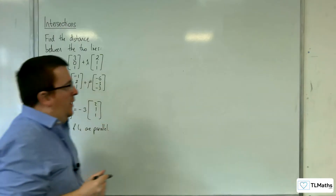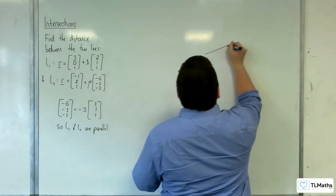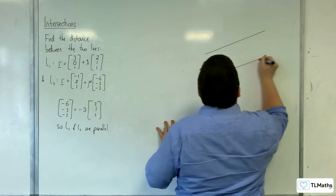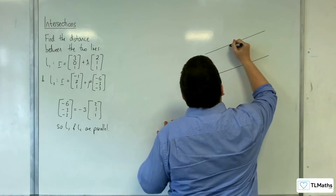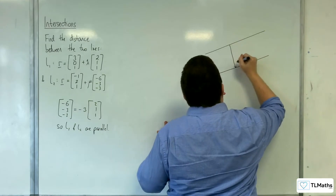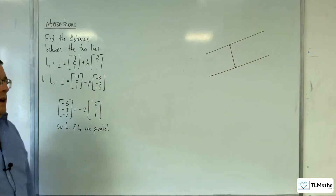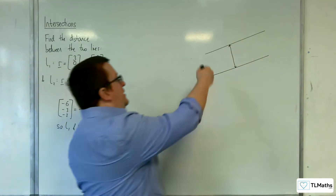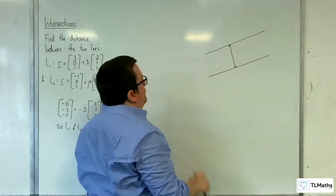So what we have are two parallel lines. When finding the distance from one to the other, it doesn't matter where we are on the two lines — that distance will be the same.